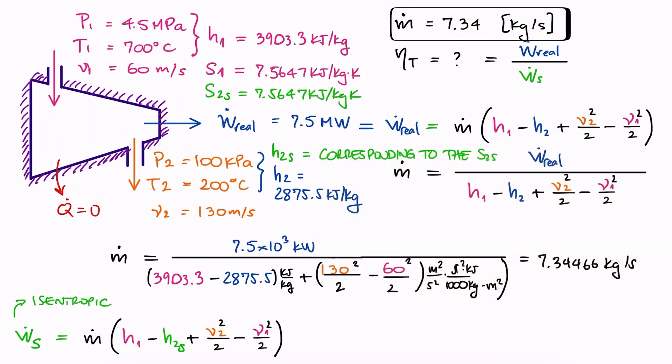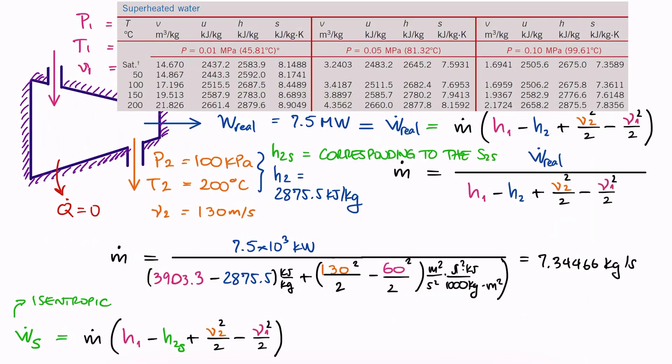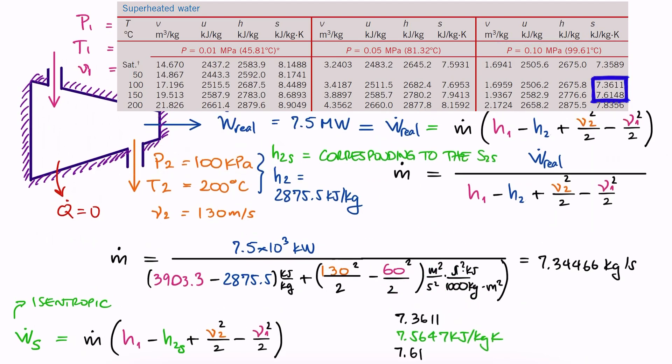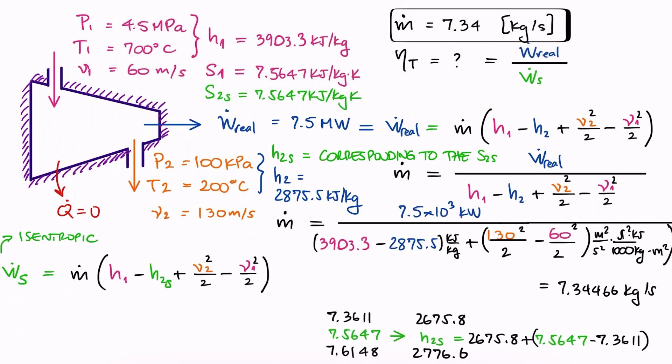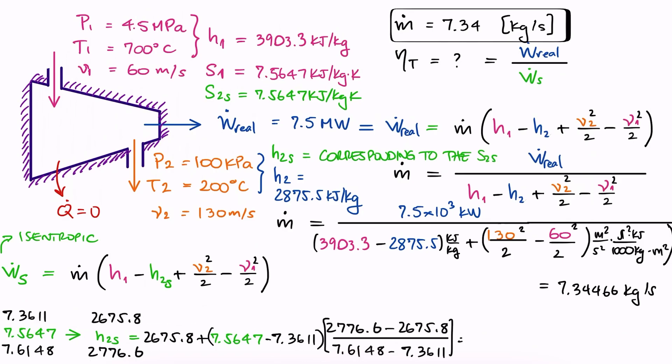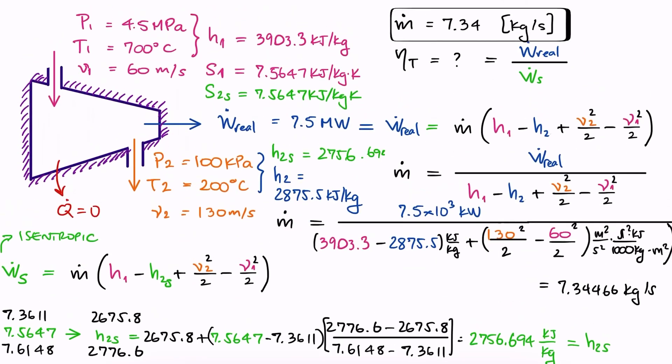We look for H2S in the superheated tables for steam at 100 kPa, since that is the exit pressure, and we see that we need to interpolate between these two values of specific entropy to find the specific enthalpy. We do that simple interpolation, links to those lectures below, and we find the specific enthalpy of 2, assuming an isentropic process H2S. And this is all we're missing.